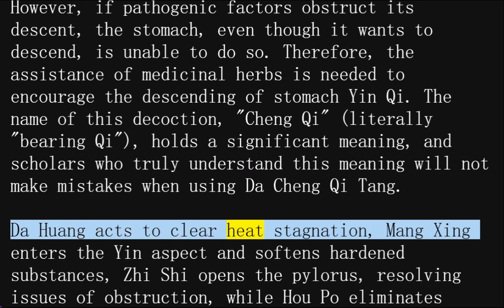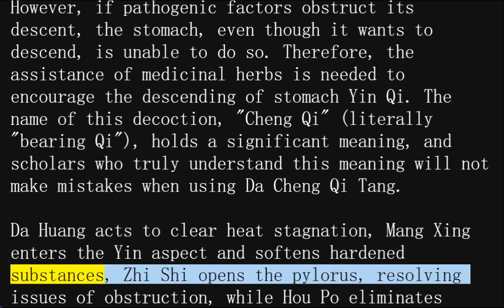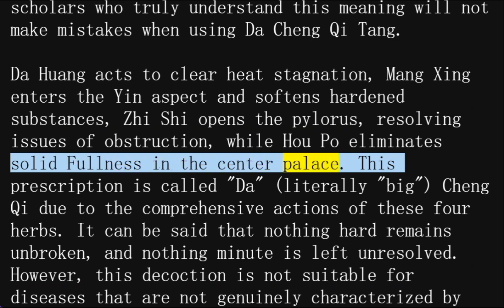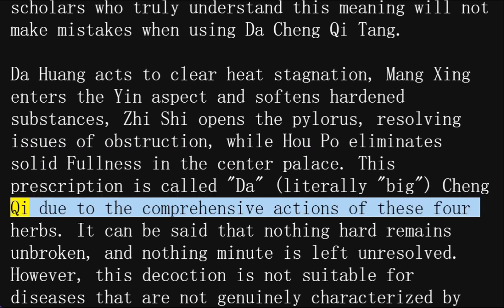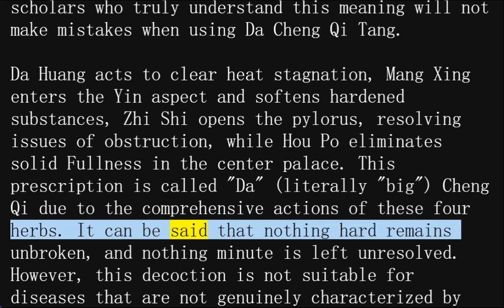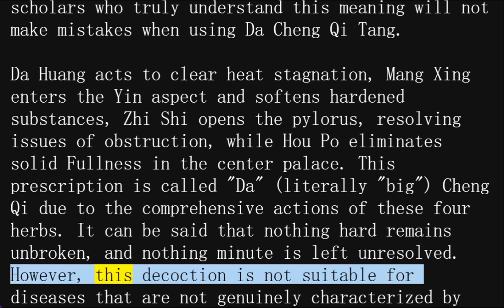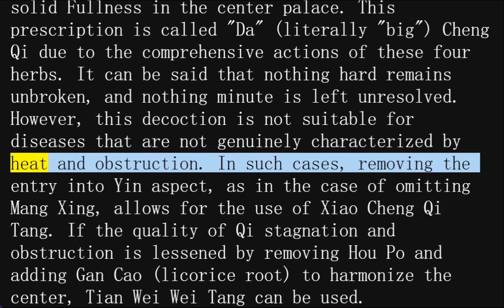Da huang acts to clear heat stagnation, mangxing enters the yin aspect and softens hardened substances, zhi xia opens the pylorus resolving issues of obstruction, while hu po eliminates solid fullness in the center palace. This prescription is called da, literally 'big,' cheng qi due to the comprehensive actions of these four herbs. It can be said that nothing hard remains unbroken, and nothing minute is left unresolved. However, this decoction is not suitable for diseases that are not genuinely characterized by heat and obstruction.